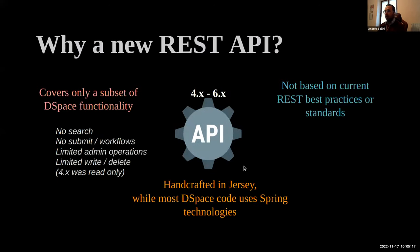For those not new to the DSpace community, you're probably aware that since DSpace version 4 we have implemented a REST API. We started with a read-only REST API in version 4 and moved to a read-write API in a more recent version. However, this REST API was very limited, only partially covering DSpace features, not based on REST best practices, very custom and complicated to work with, and the implementation was essentially all hand-crafted code, making it difficult for new developers.